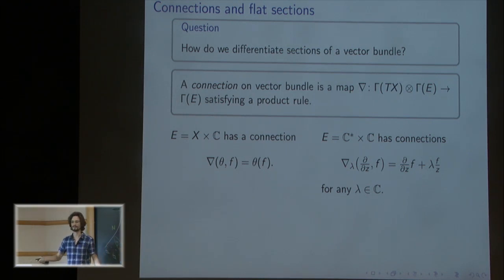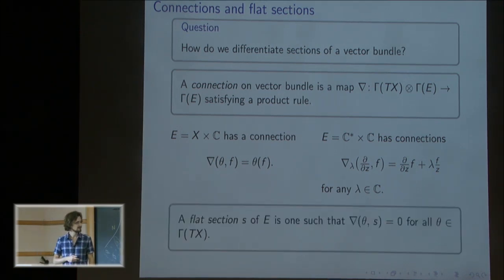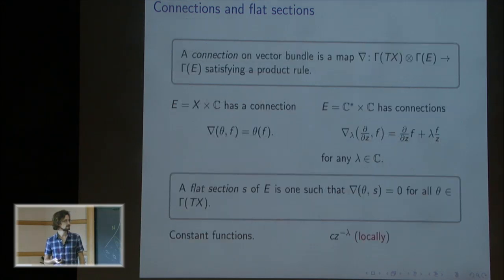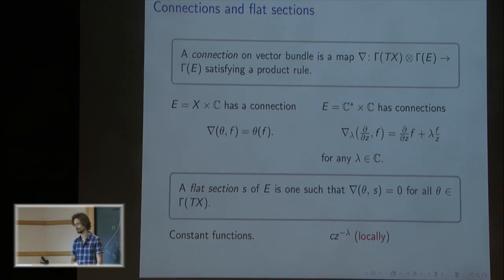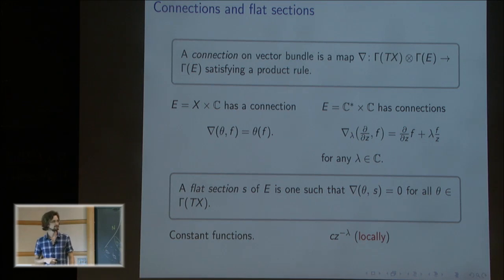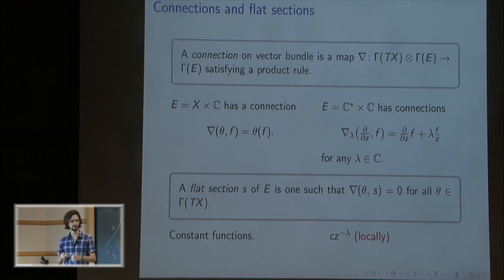There are lots and lots of these things, and if there are lots of some things, we want to classify them. For that, we need the definition of a flat section. A flat section is something that gets killed by all differential operators — if I apply any differential operator to that section under that connection, it goes to zero. For the trivial connection, flat sections are just constant functions. For the twisted connection on C*, you solve the differential equation and see that solutions are c · z^(−λ). But that's only defined locally — not on all of C* — so you can't have a global solution, only lots of local solutions.